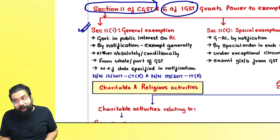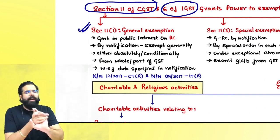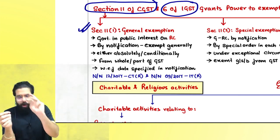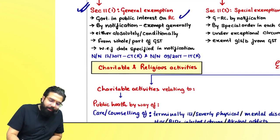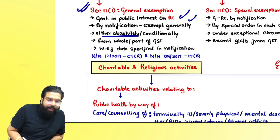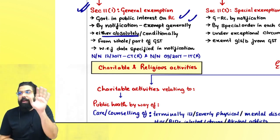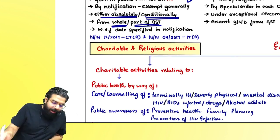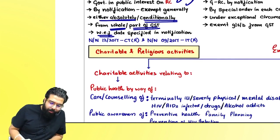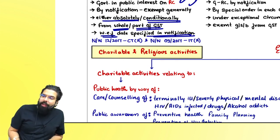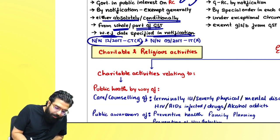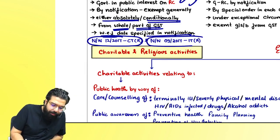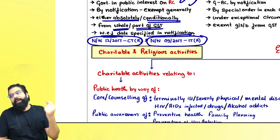Section 11(1) gives the government the general power to issue exemptions. The government, in public interest on the recommendation of the GST Council, can exempt something generally — either absolutely (completely without any condition) or conditionally — from the whole of GST or part of GST, effective from a date specified in the notification. For services, the government issued Notification No. 12/2017 Central Tax Rate, and for IGST services, exemption was issued by Notification No. 9/2017 IGST Rate.